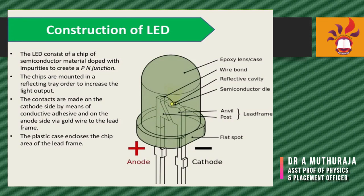The construction of LED: an LED consists of a chip of semiconductor material doped with impurities to create a p-n junction. Semiconductor material is common to all kinds of electronic devices in day-to-day life. Without electronics, you could not imagine all the electronic equipment and electronic industry.